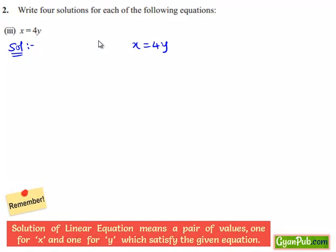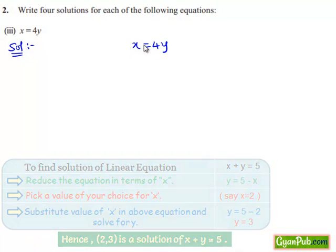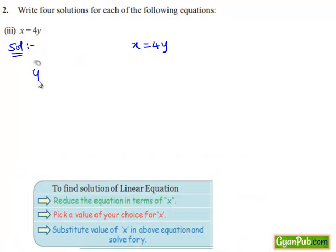We know that a solution means a pair of values — one for x and one for y — that satisfies the given equation. In order to find the solution for the given equation, we first express y in terms of x. We give some value to x and find the corresponding value of y. Then the ordered pair (x, y) represents the solution of the given equation. Here, expressing y in terms of x, we get y equals to x divided by 4. Let it be equation number 1.